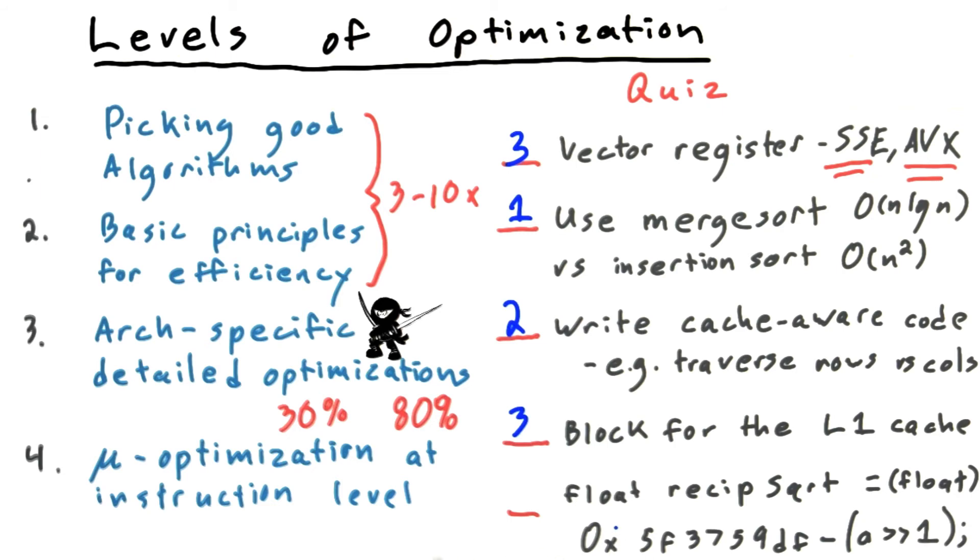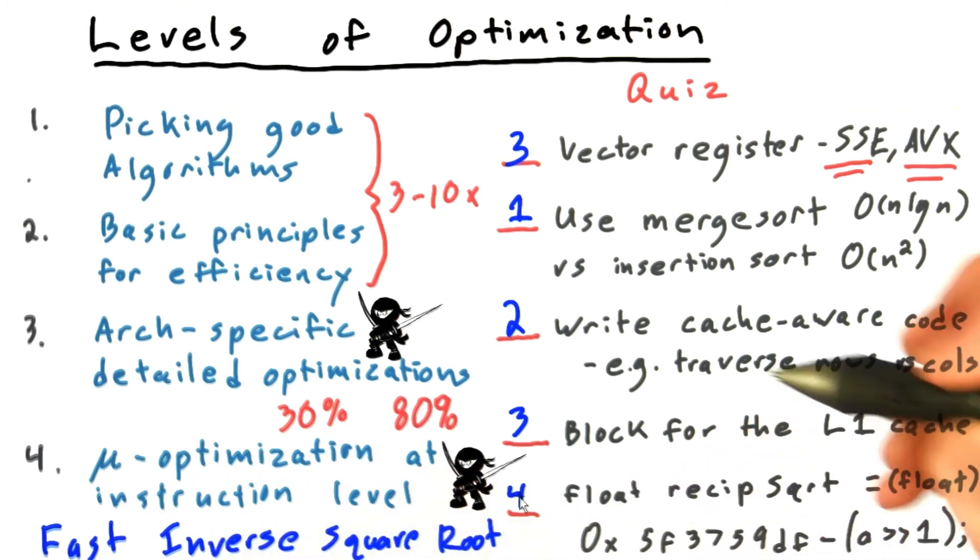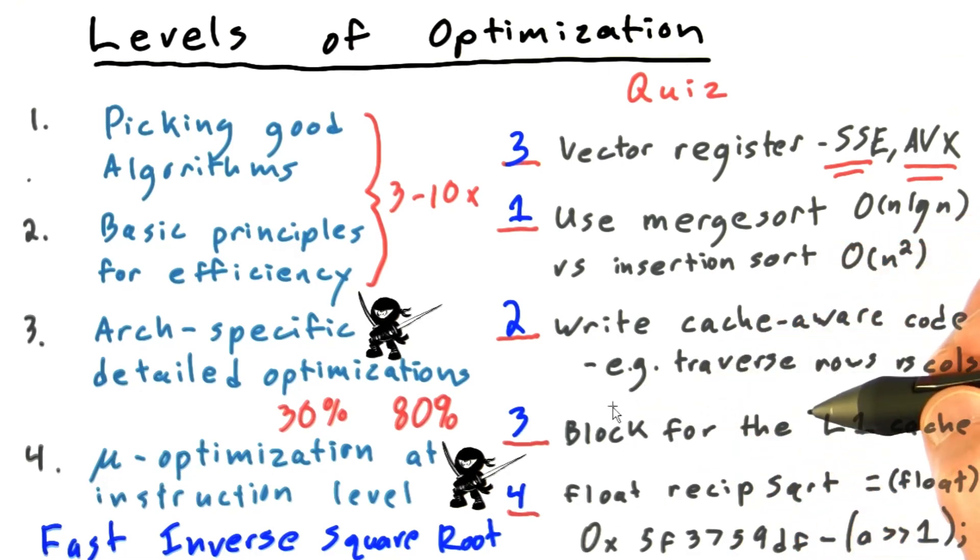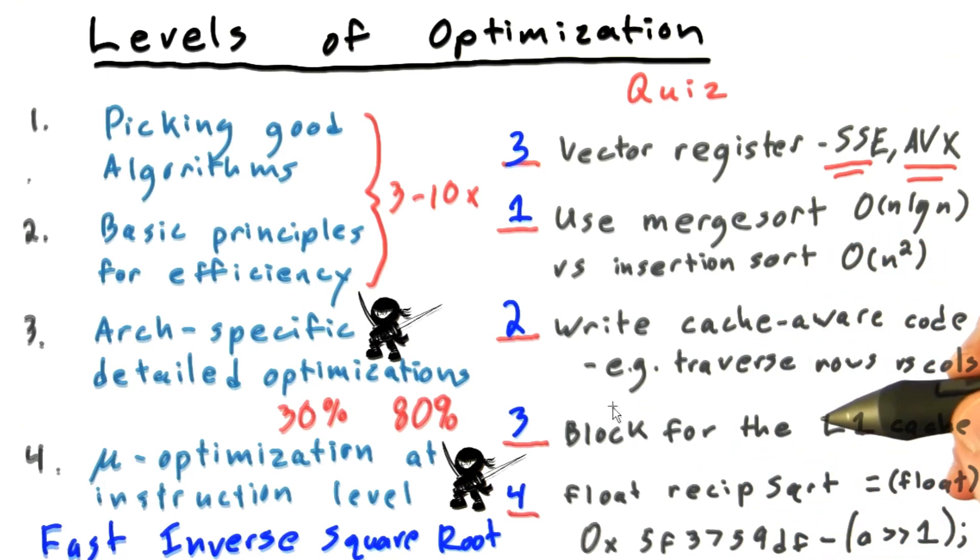And finally, this last one, I really just threw that in there for fun. Clearly, shifting a number, shifting a floating-point number, casting it to a float and subtracting it from this magic constant is firmly in the category of micro-optimization at the bit-twiddling instruction level. This is an infamous hack that's been used in many places, most famously in the video game Quake 3. If you're curious, go to Wikipedia and look up fast inverse square root. Of course, these are firmly in the ninja category, and we won't be talking about them at all today or in the rest of the course.